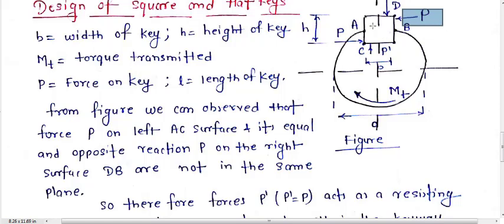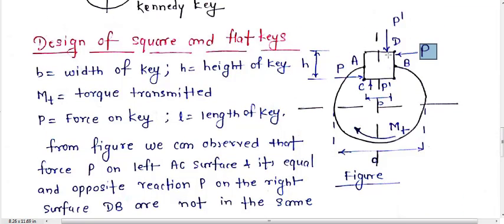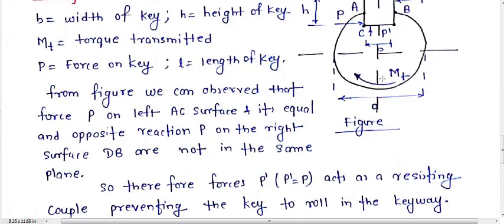Without that, the key cannot transmit the torque to its hub. The two P forces are not in the same plane, so therefore forces P and P prime act on a resulting couple preventing the key from rolling in the keyway.